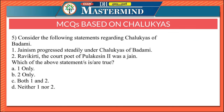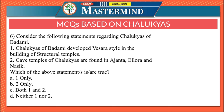The fifth question: Jainism progressed steadily under the Chalukyas of Badami, and Ravikirti, the court poet of Pulakeshi 2, was a Jain. Both statements are correct, Option C. Ravikirti, who composed the Aihole inscription, was a Jain. Jainism was steadily on the path of progress under the Chalukyas of Badami. Please remember these points.